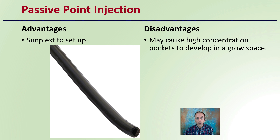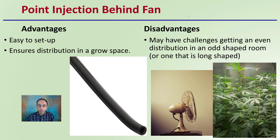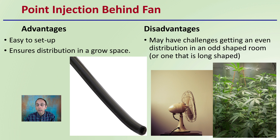We also have injection point behind a fan, which is like the next step above the last one. Simply put the injection point right behind a fan to help the mixing process. The advantage is it's really easy to set up, and most likely you might have a fan in your growing space already. It ensures distribution throughout the grow space. However, this may have challenges in getting even distribution in an odd-shaped or particularly long room, so it might be good for a very small grow tent operation, but not necessarily for a larger growing area.